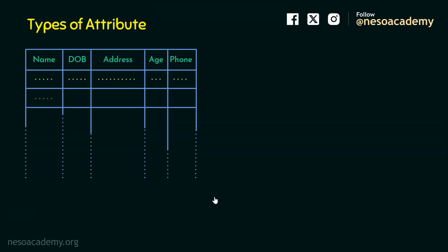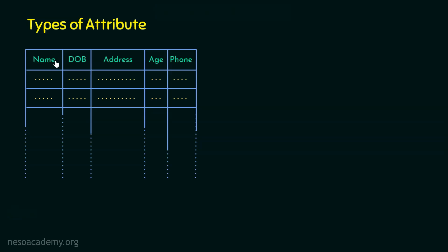In DBMS, everything is going to be stored in tables, where a table contains rows and columns. Rows are the values that are stored, but columns are the attributes — these are the headings for those columns. Columns are also referred to as attributes in a relational database management system. It is important to understand that attributes have various types and must be properly handled in DBMS, otherwise it will lead to inconsistency.